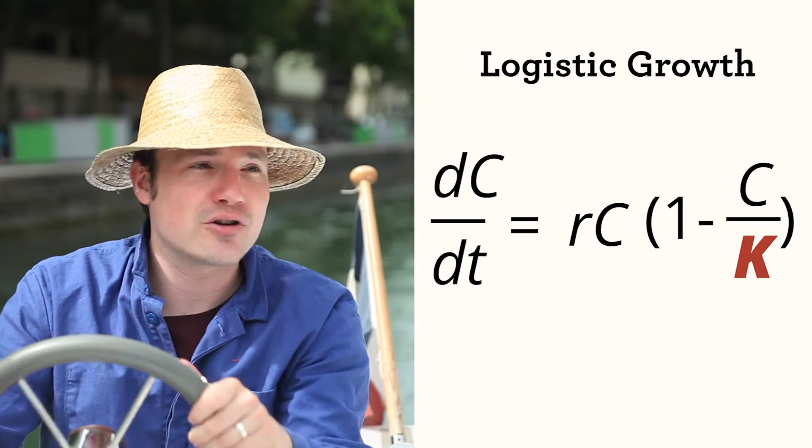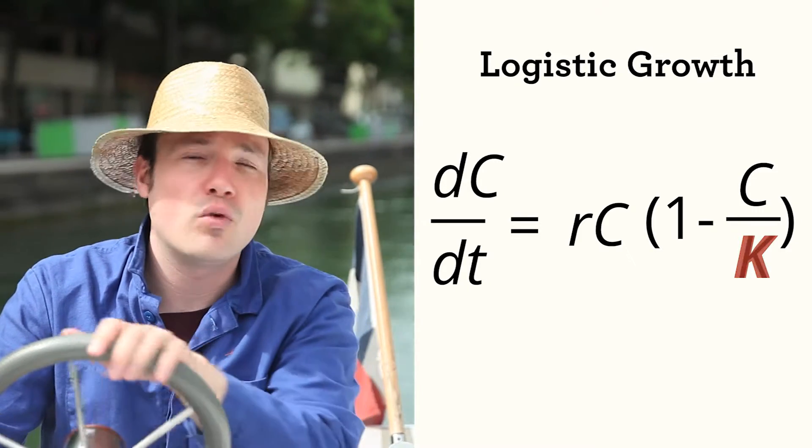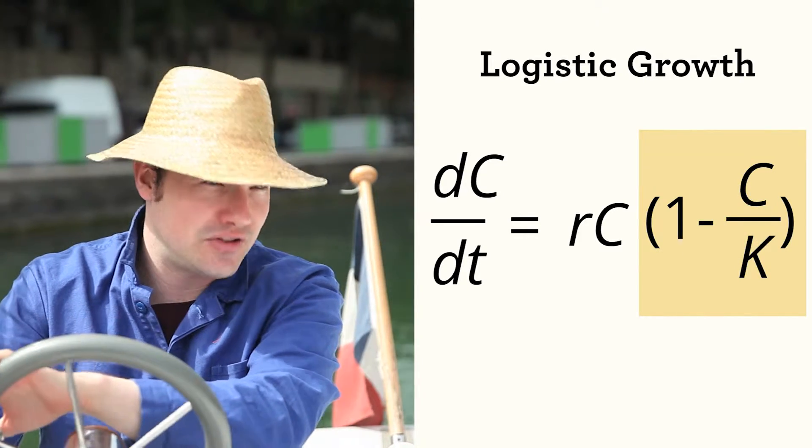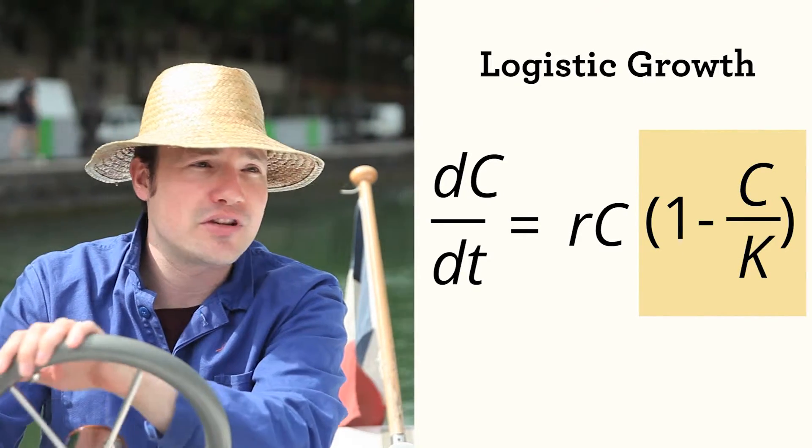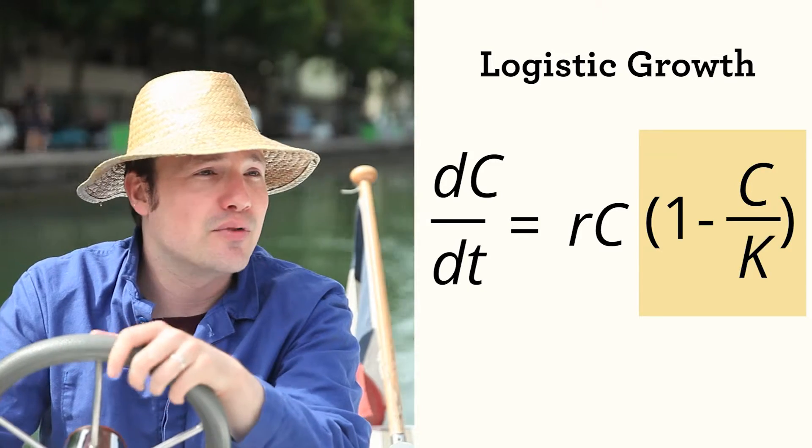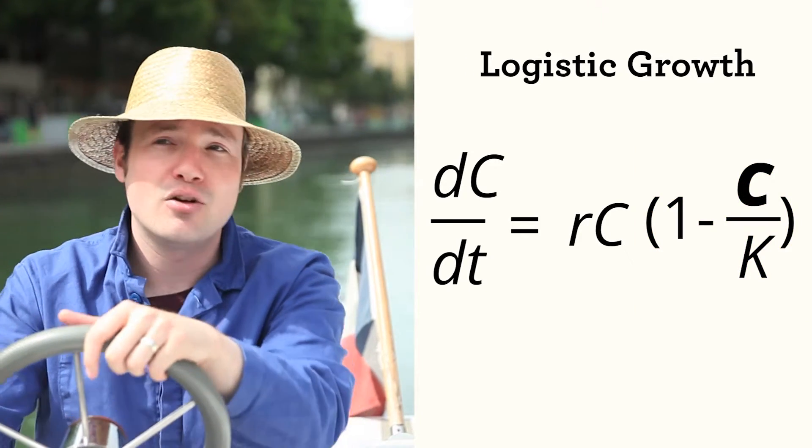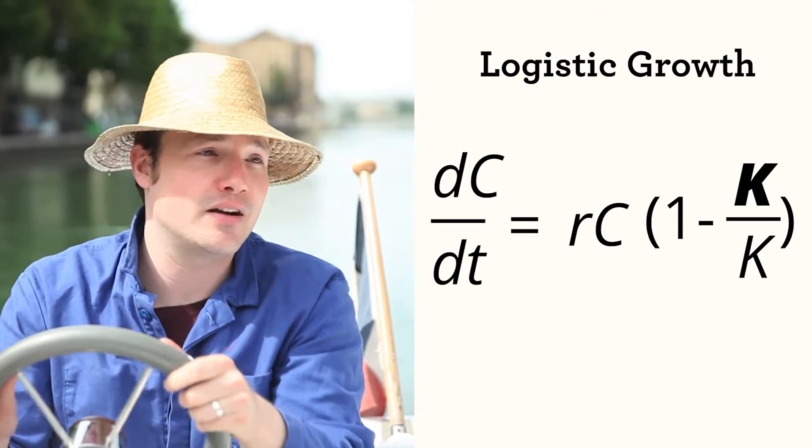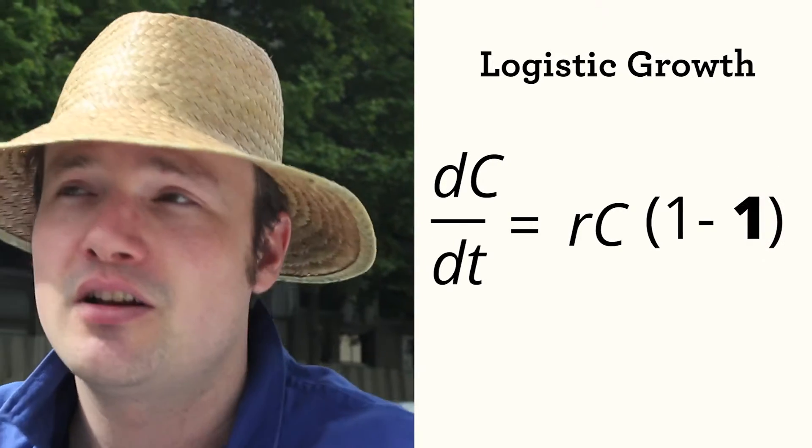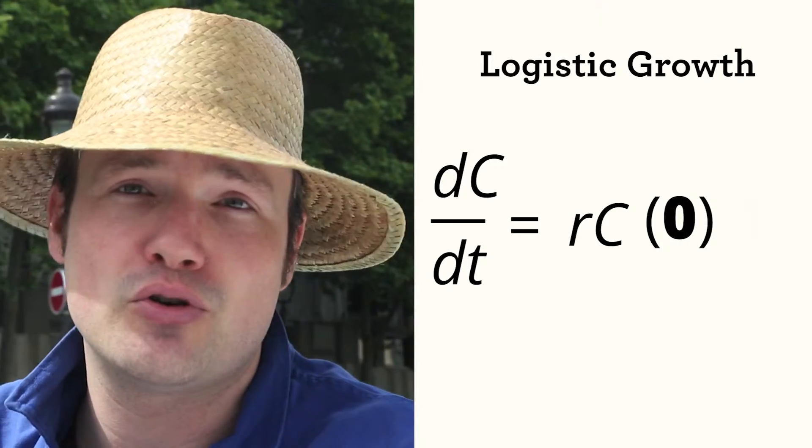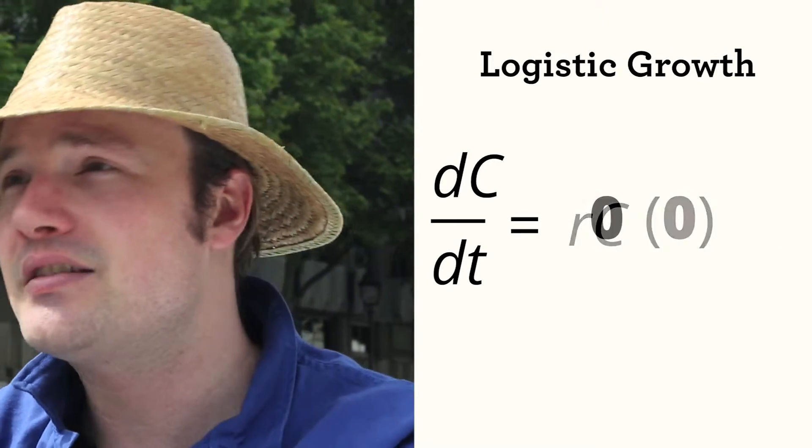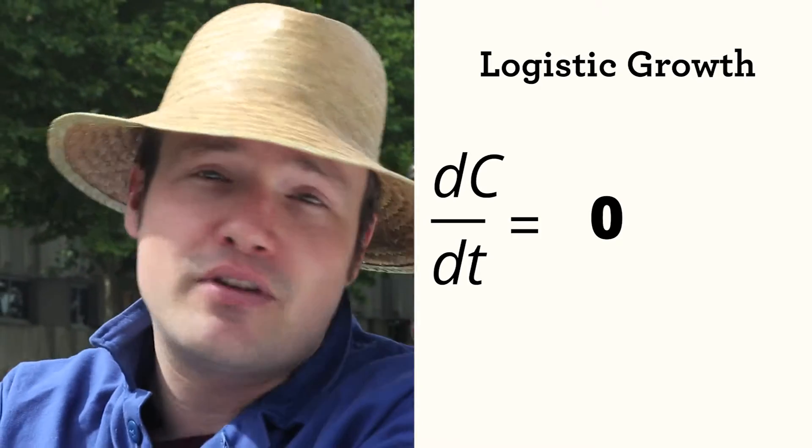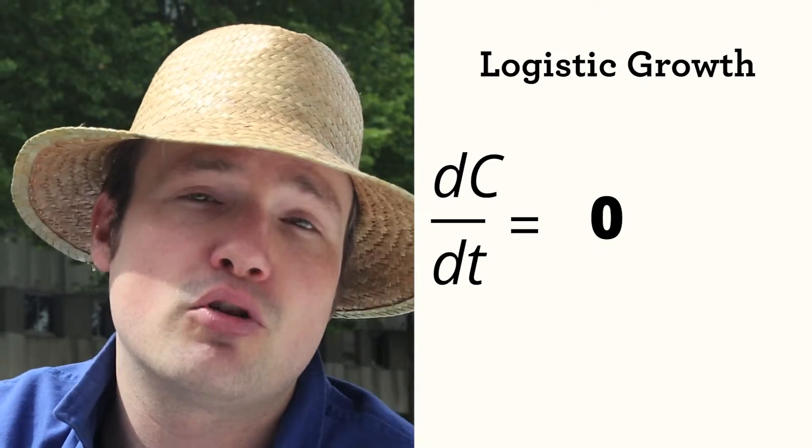Let's look closer at the term in the parentheses, 1 minus C over K. Imagine what happens when C, the number of cells, equals K, the maximum number of cells allowed. Well, in that case, C divided by K equals 1, which means that 1 minus C over K is 0. Zero times anything is 0, so there's no growth. In this expression, the logistic term gets smaller and smaller until eventually it forces the entire growth rate to be 0.